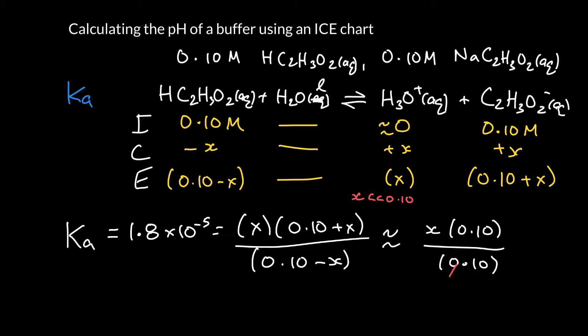And, aha, so our 0.1 over 0.1 is just 1. So Ka is equal to x.